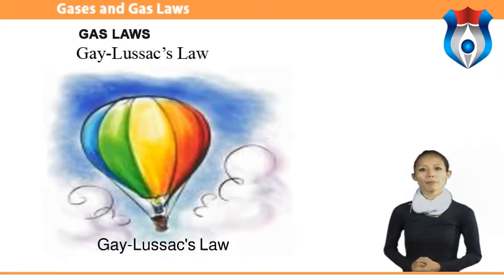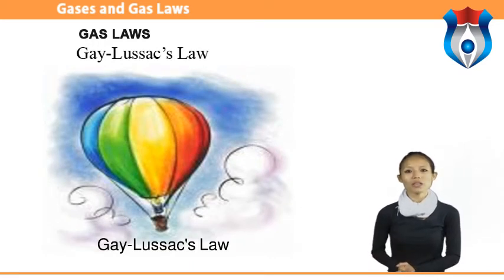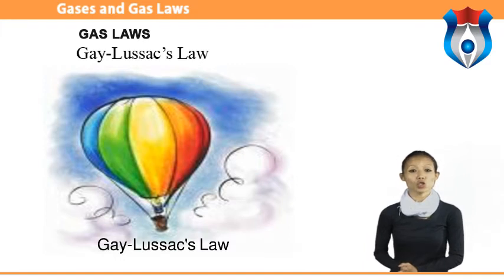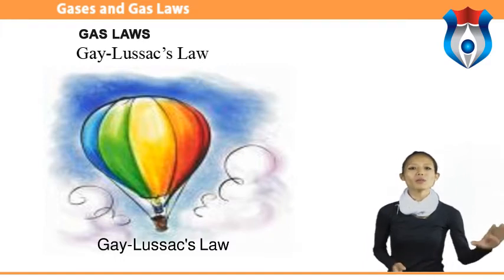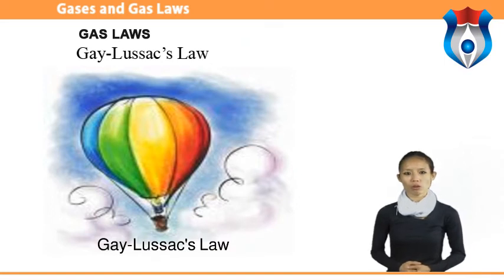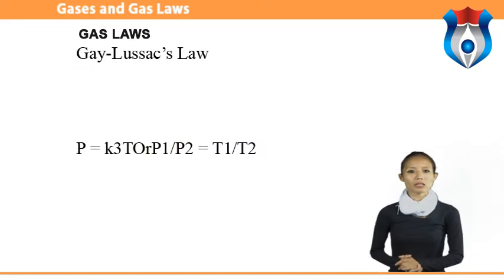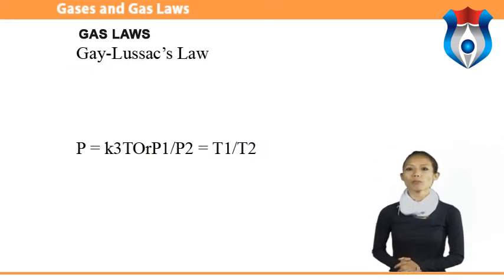Gay-Lussac's law: this law is about how pressure and temperature relate, which means the law assumes a constant volume of gas — meaning we assume the volume does not change. This law says that pressure is directly proportional to temperature. The formula is P₁/P₂ = T₁/T₂.